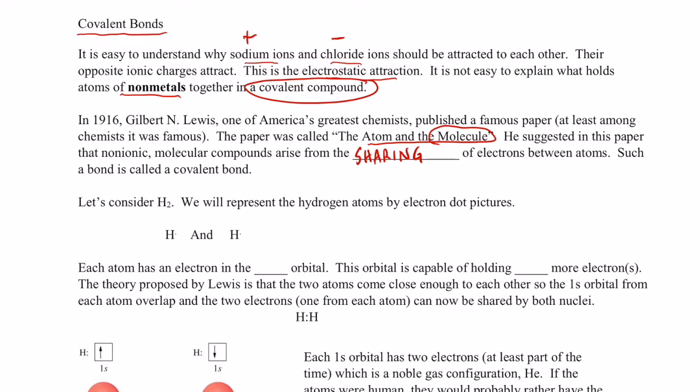Such a bond is called a covalent bond. So covalent bonding is the sharing of electrons, whereas ionic bonding, as you recall, is the transfer of electrons.